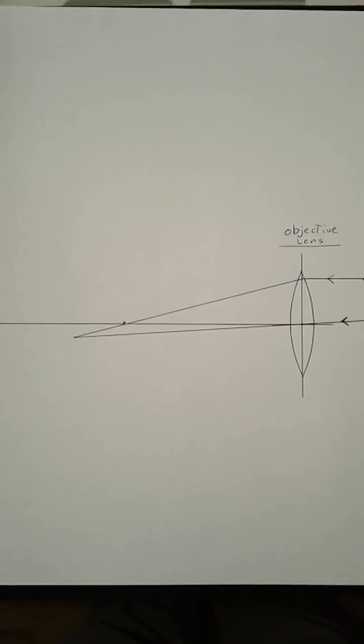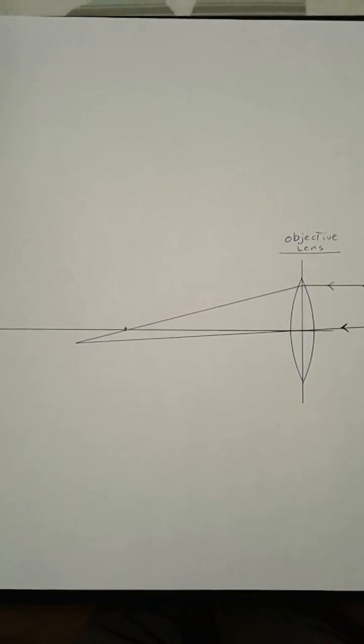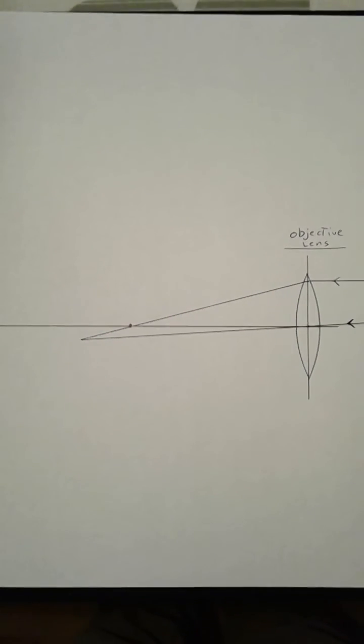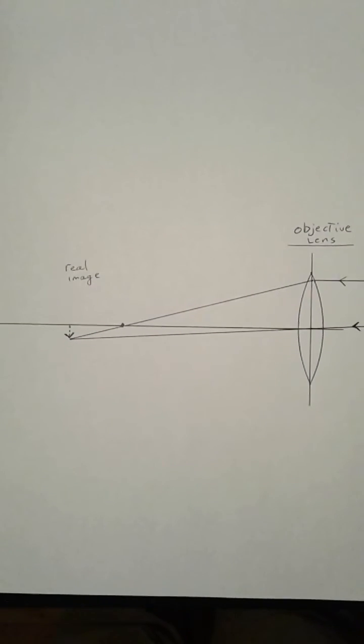The light ray from the object that goes to the center of the lens comes in at a very shallow angle because it's so far away. It forms an intersection off to the left. This forms a real image.